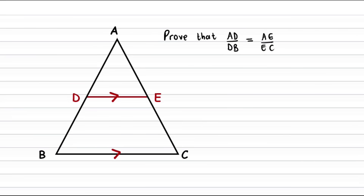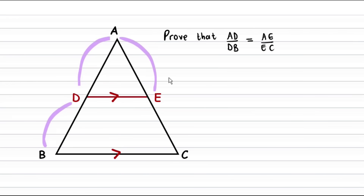Hey guys and welcome to this video. In this video we'll be proving the Proportionality Theorem, which states that if we have a triangle and a line drawn inside this triangle in a way that this line is parallel to one side of the triangle, then the length of AD over DB would be equal to the length of AE over the length of EC.